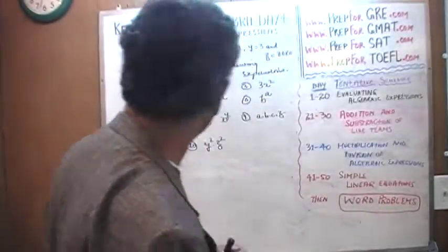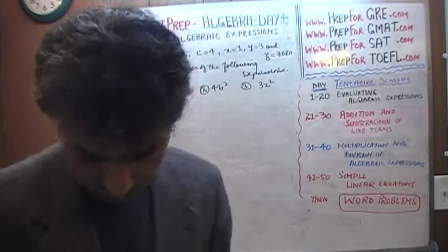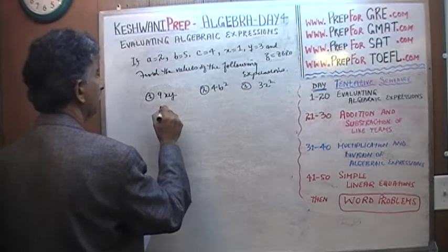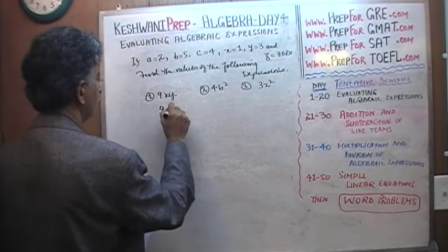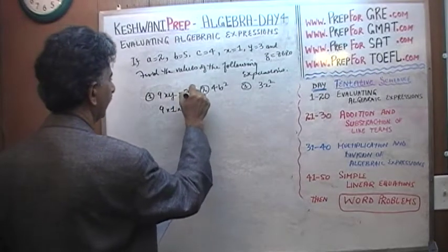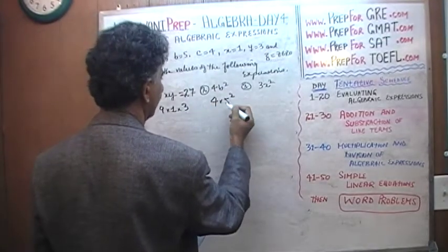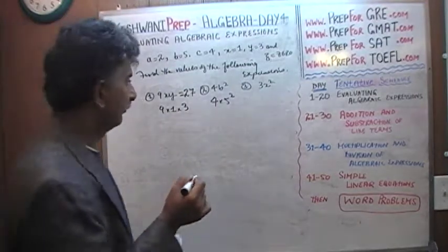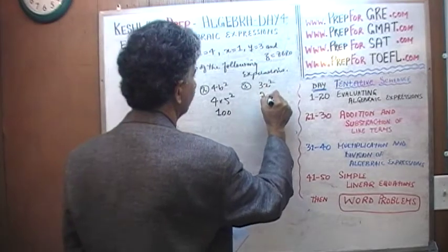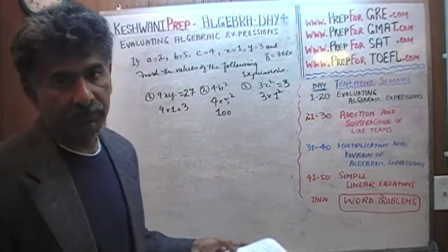All right, let's keep going then. Number one: 9 times x times y. Nine times x, which is 1, times y, which is 3. Nine times 1 times 3 is 27. Number two: 4 times b squared. B is 5, four times 5 squared. Five squared is 25, 25 times 4 is 100. Next one: 3 times x squared, which is just 1. One squared is 1, so the whole thing is just 3 because 3 times 1 is 3.